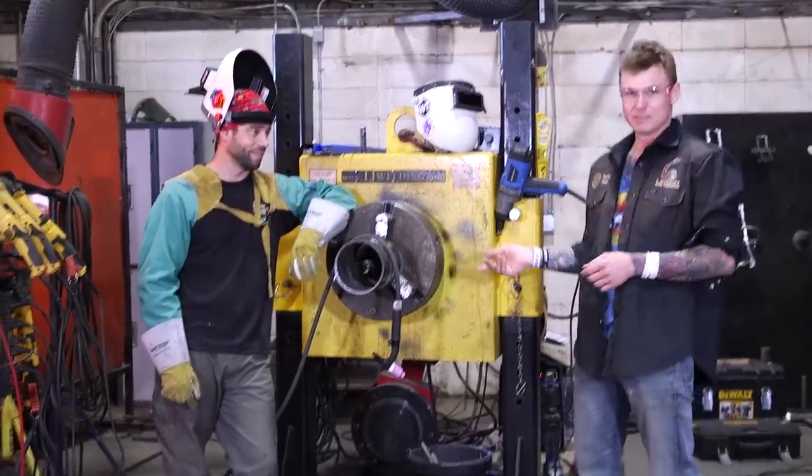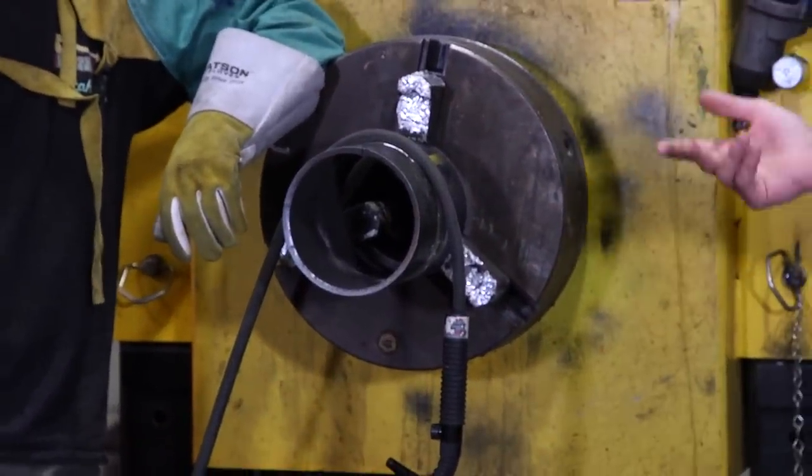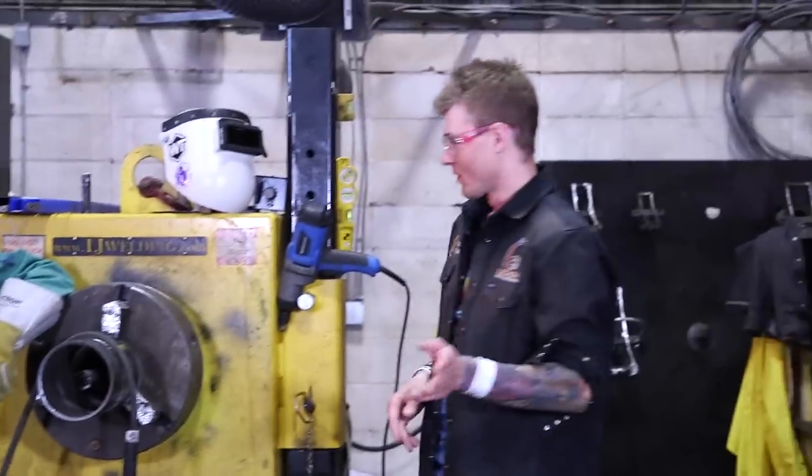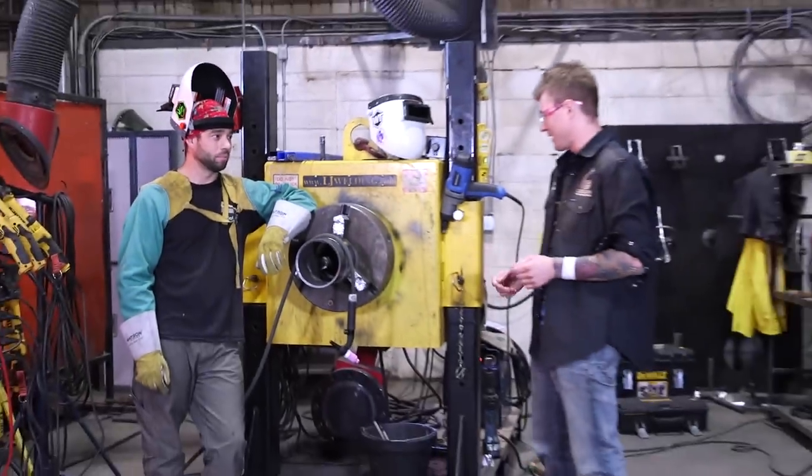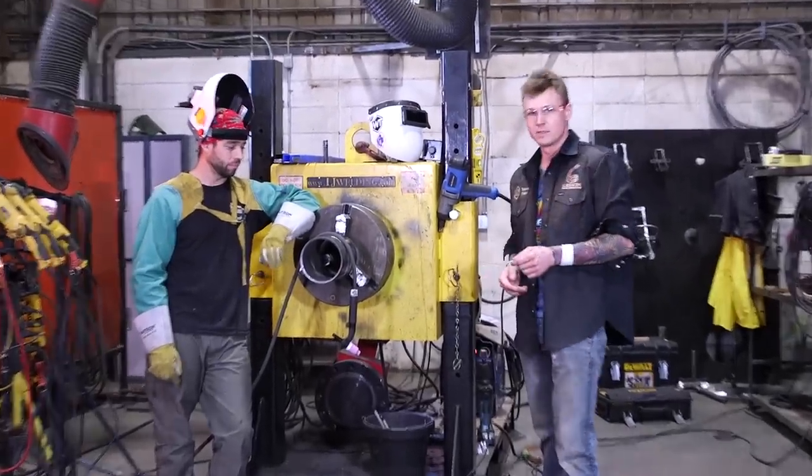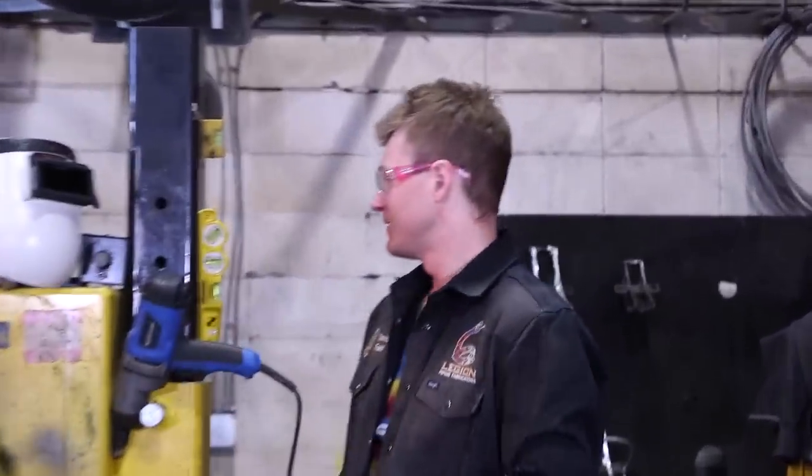So he came in here and he did a skill proficiency test. It was fantastic. We didn't even look at it. Yeah, he got the job. So he's going to be using the Miller XMT 304, the machine that he has. And he's going to be doing a TIG root and TIG all the way out. So Jay-Z, take it away.